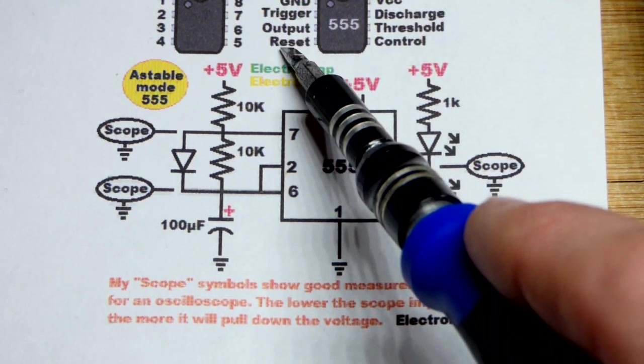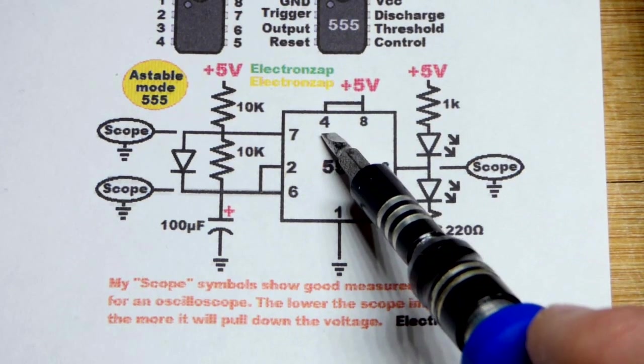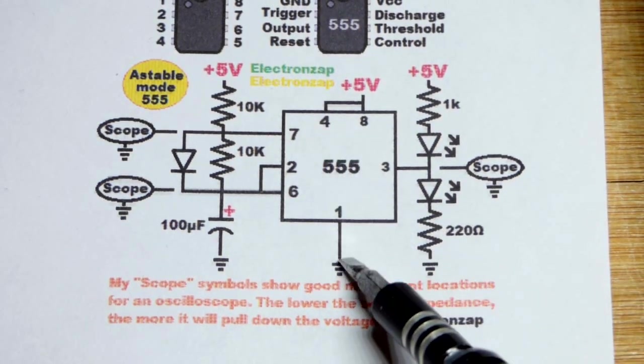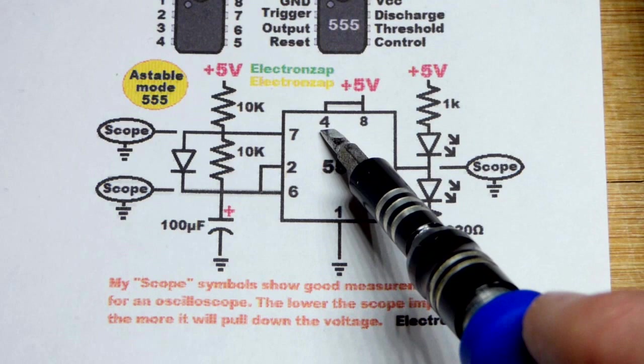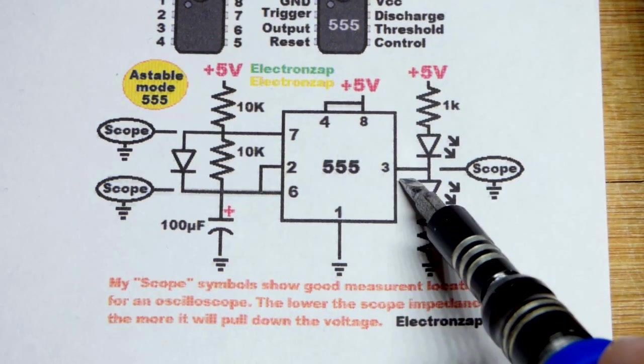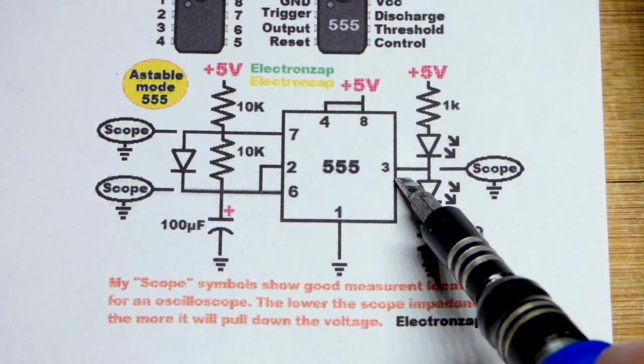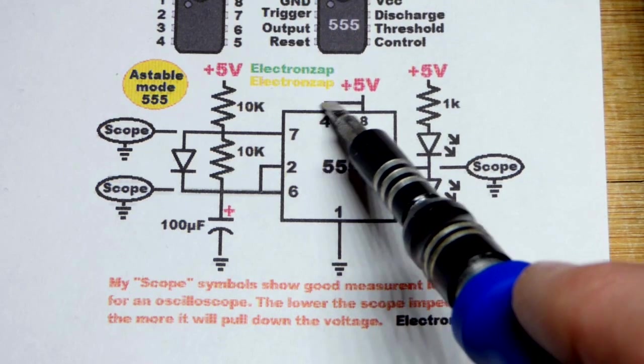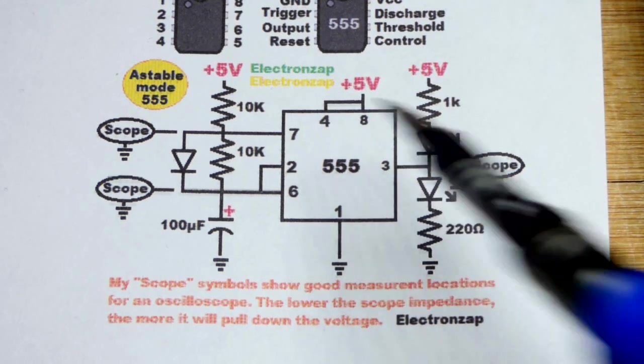Now we have pin 4 here. That is the reset pin. We don't want it to do anything. If you give it a low input close to ground, less than half the supply voltage, it's going to hold the output low. So we don't want it to do anything. We put it directly to the positive supply.